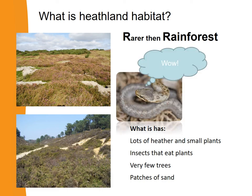Heathland is made up of lots and lots of heather plants that are a purple colour when they're in flower. It has lots of heather and lots of small plants that are close to the ground. And if it has lots of plants and lots of flowers, it probably has lots of insects buzzing around and scuttling around that eat the plants.